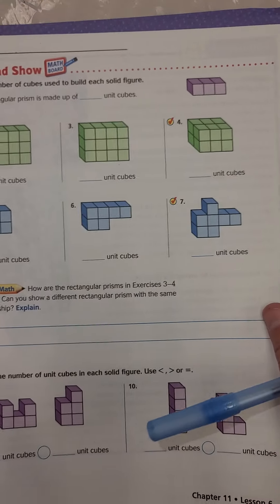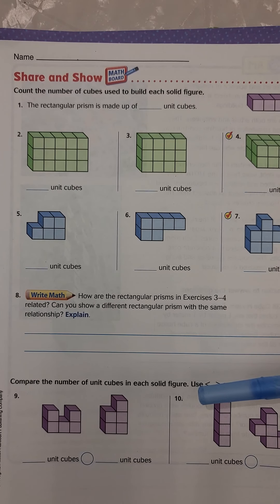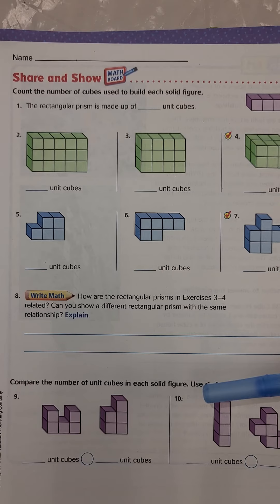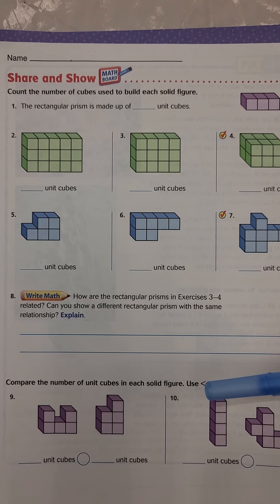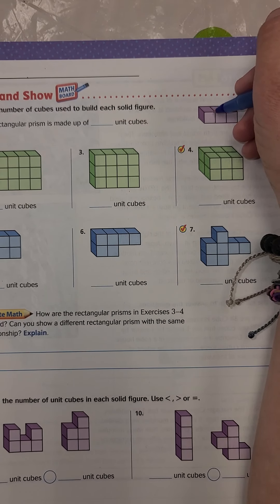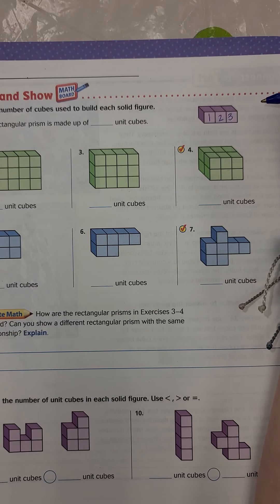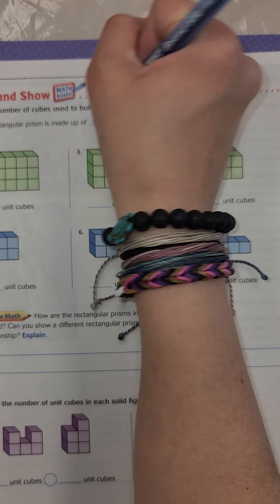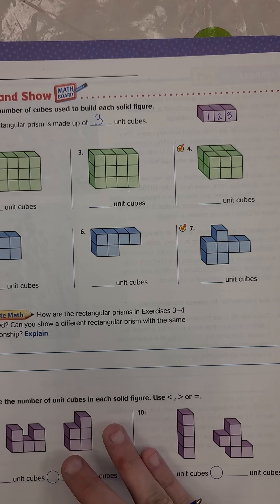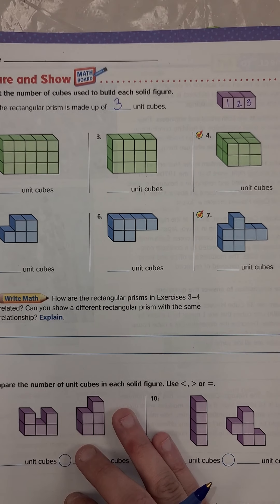All right. So let's do a couple of these together. This one says count the unit cubes used to build each solid figure. So the rectangular prism is made up of how many unit cubes? So let's look at this rectangular prism. It's made up of one, two, three unit cubes. So we would say three unit cubes because we're actually counting the cubes itself, not the faces, not the edges, just the cubes.